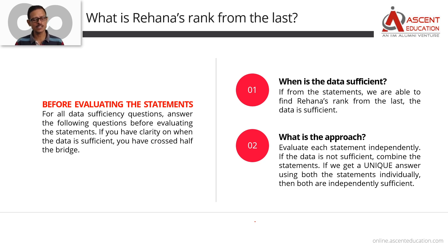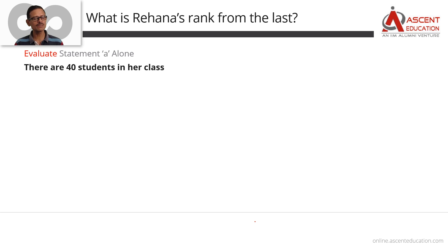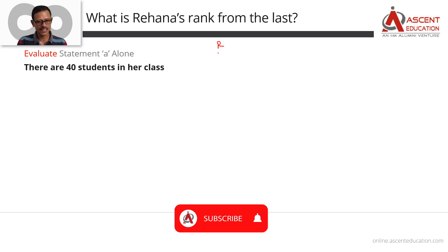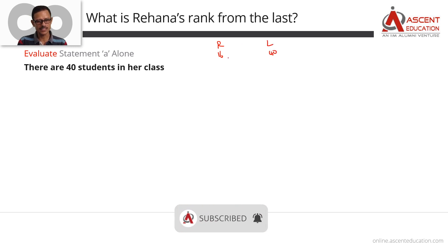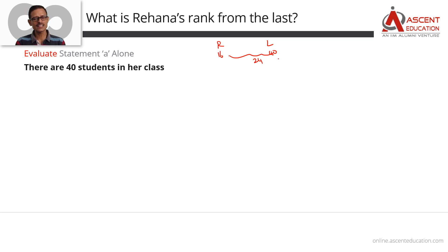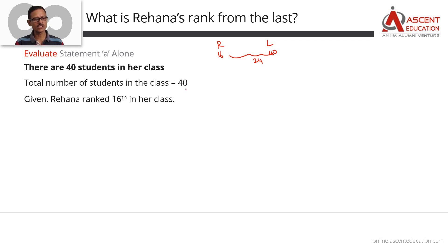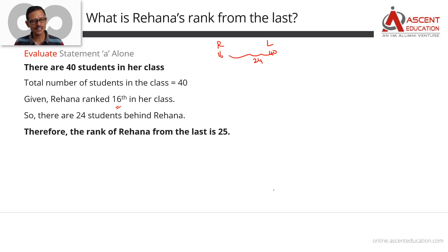Now, how many students are in the class? Statement A tells us there are 50 students. Rahana is ranked 16th from the first. So the number of students behind her is 50 minus 16, which equals 34. Therefore her rank from the last is 35. Wait — if there are 40 students, Rahana ranked 16th means there are 24 students behind her, so her rank from the last is 25. We've been able to answer this question uniquely.